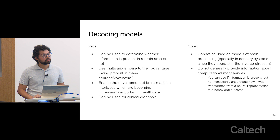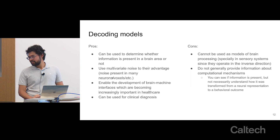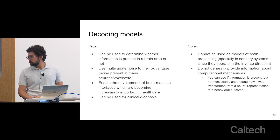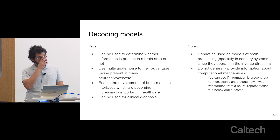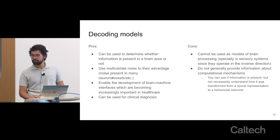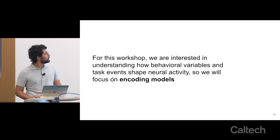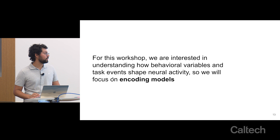Is a decoding model always a classification problem? The examples mentioned are all classification examples, but it's not entirely clear — a behavioral outcome could be on a linear scale too. For this workshop, what we're going to be focusing on is understanding how behavioral variables and task events in a decision-making task shape neural activity. So we will be focusing on encoding models for the rest of this workshop.